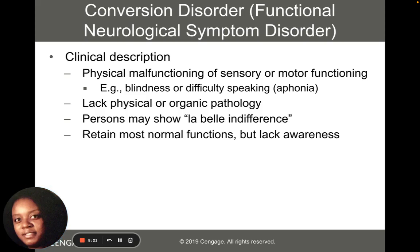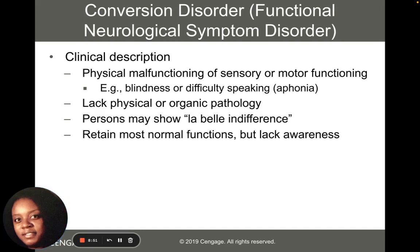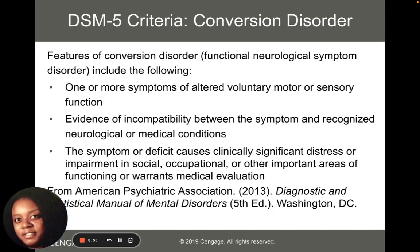Conversion disorder occurs when a person has some type of sensory or motor functioning that is not happening properly and there's no medical cause for it — no organic pathology. The person probably maintains their normal functions but doesn't have awareness of that. For example, it might be someone who can't speak although there's no medical cause, or someone who's blind but there's no medical cause to their blindness. Conversion disorders are very hard to explain because this is somebody who is seemingly healthy but whose anxiety is manifesting itself that way.